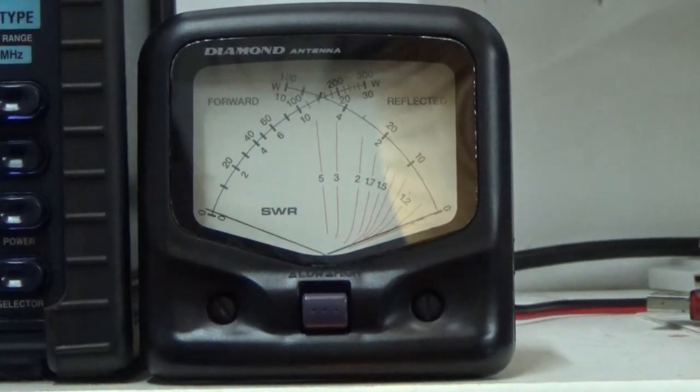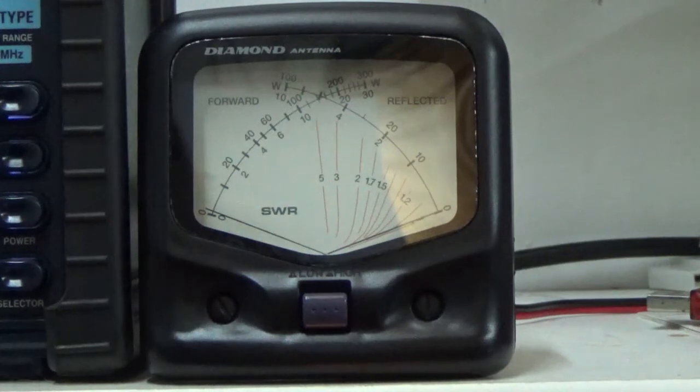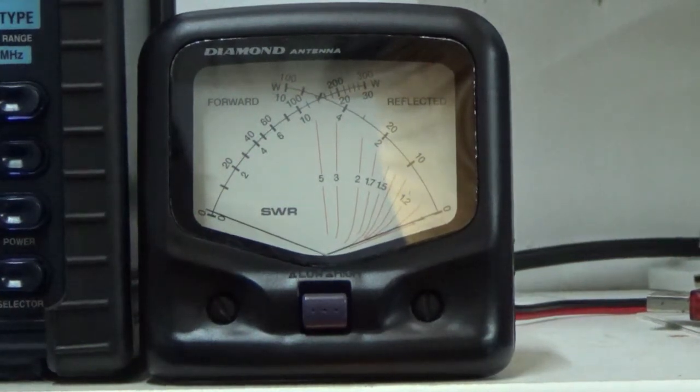I'm going to launch Ham Radio Deluxe and start it. I'm going to go ahead and connect to the radio - it's already turned on. Okay, now watch what happens when I transmit. I have Ham Radio Deluxe turned on, connected through a USB cable.